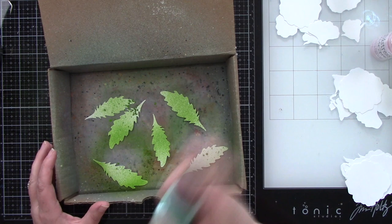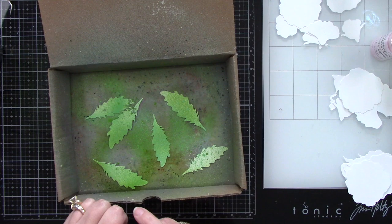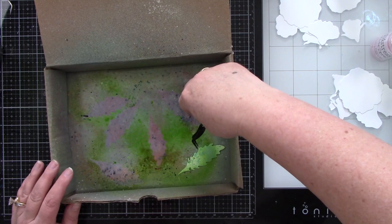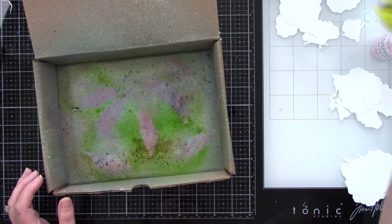For the leaves I used Mowed Lawn and Cracked Pistachio. Again, this is the Distress Oxide sprays. I am not trying to necessarily get full coverage. I am on purpose leaving kind of open areas, so I'm not worried about it being perfect. I want it to not be perfect. That's kind of my whole point here.